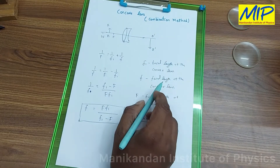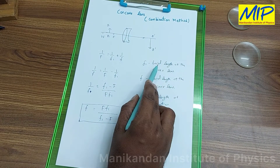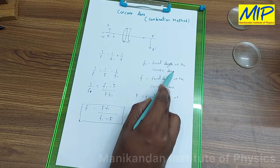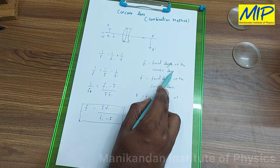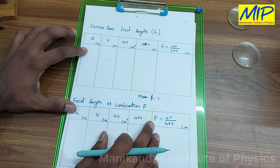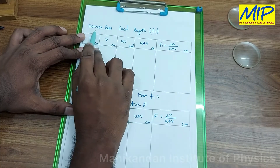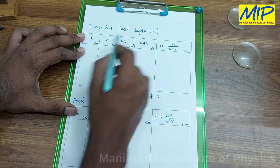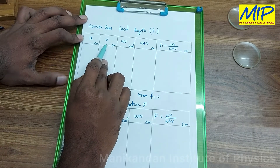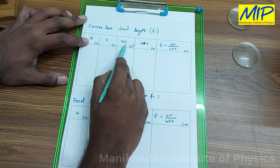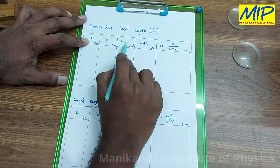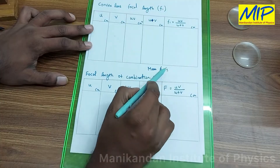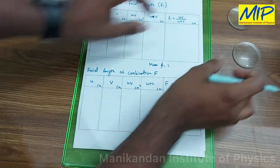I have already uploaded a video on how to determine the focal length of the given convex lens — I will give the link in the description if you want to watch. We are going to use a table to find the focal length of the convex lens first. This gives us F1, where u is the object distance, v is the image distance, and we use u×v and u+v columns to find the focal length.